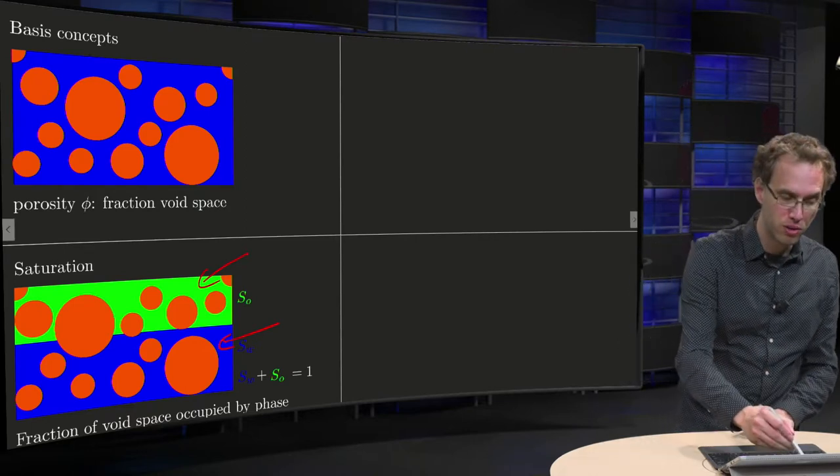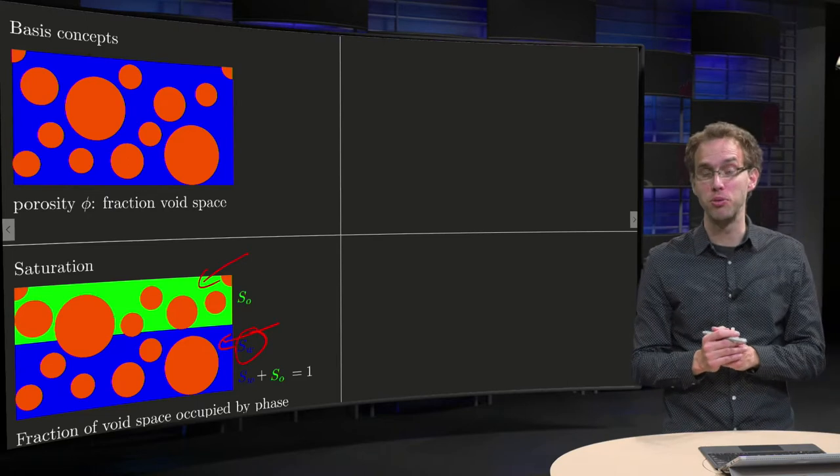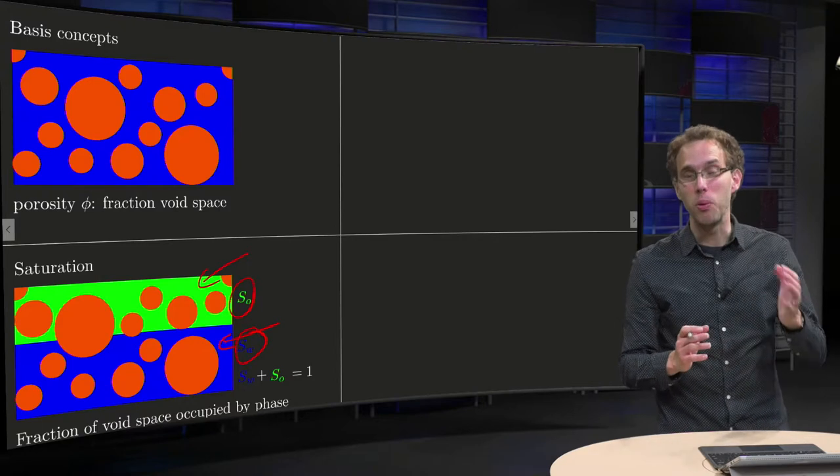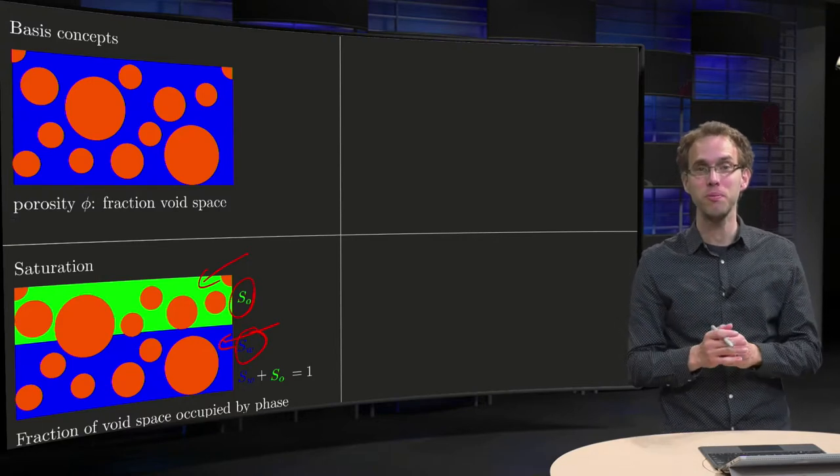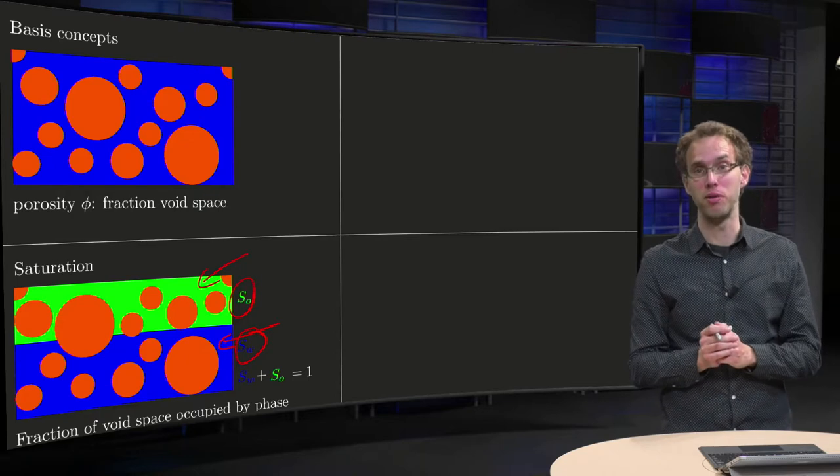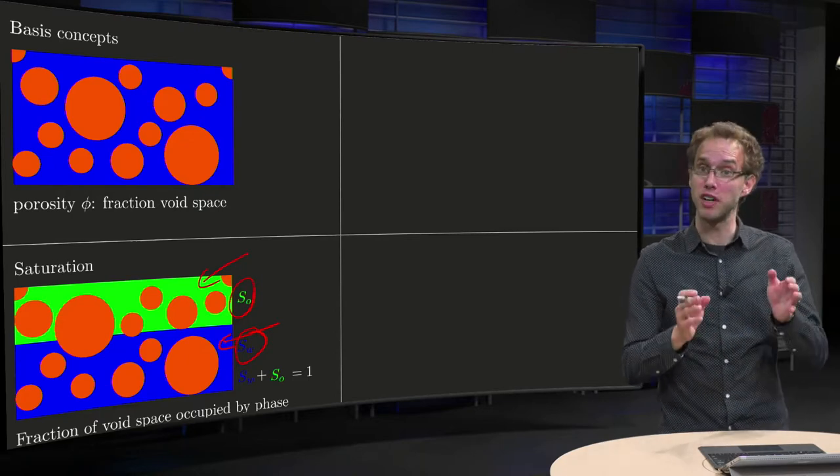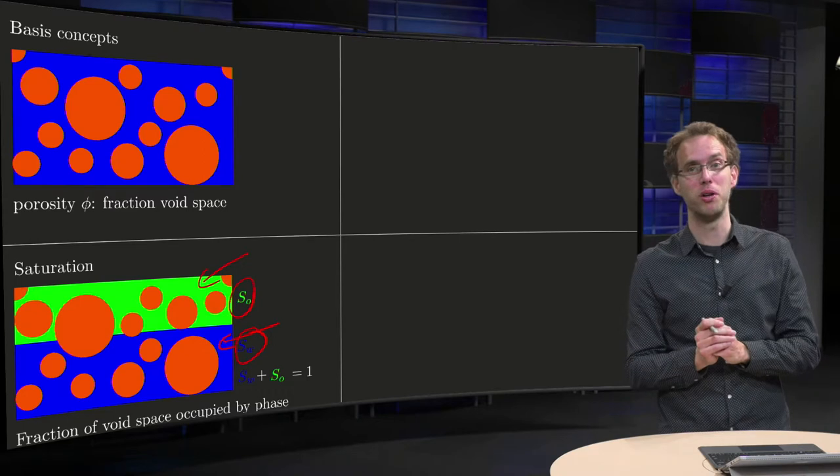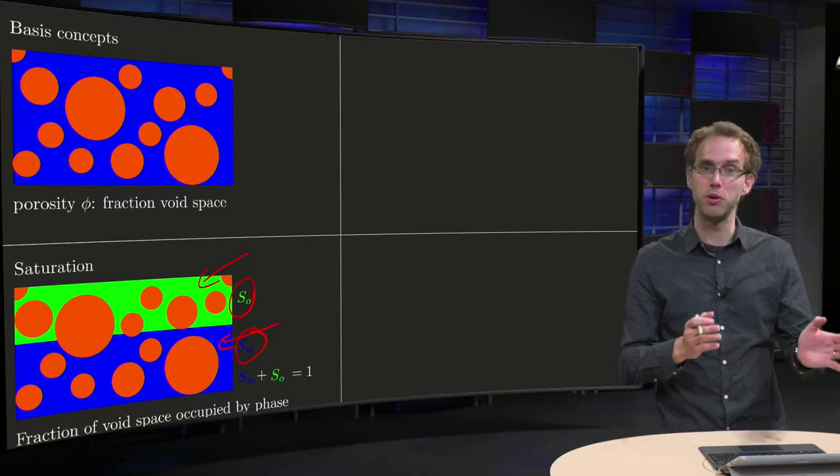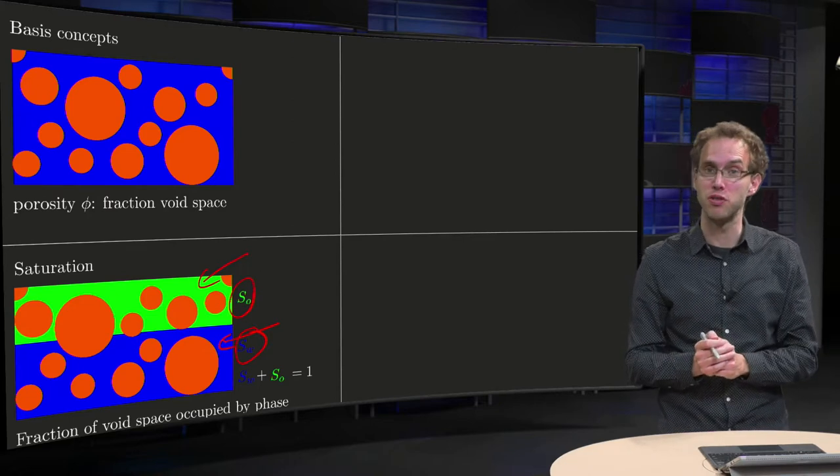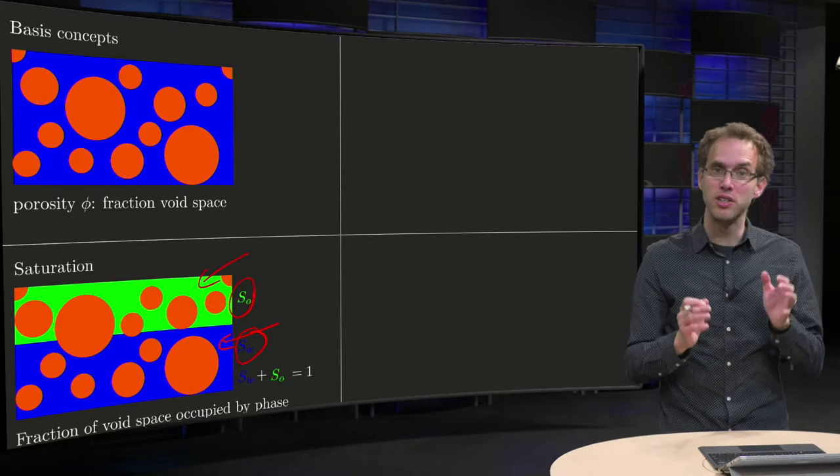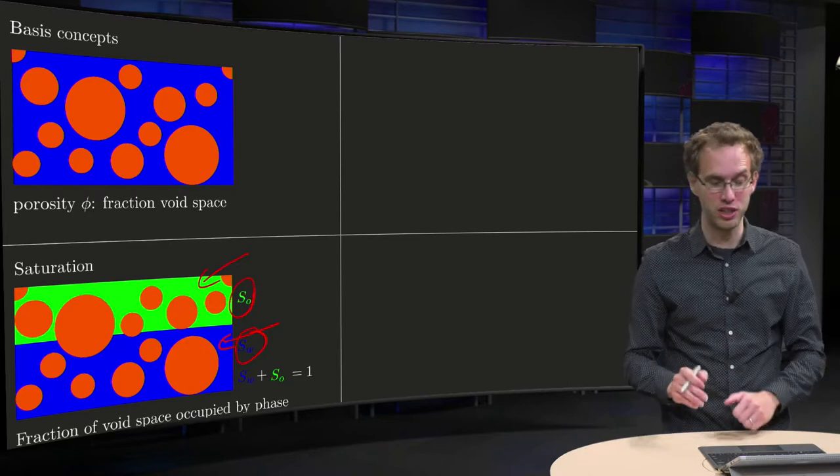Well for that we use the concept of saturation, SW for the water saturation and SO for the oil saturation. Now what's that? This SW is the fraction of the void space occupied by water, SO is the fraction of the void space occupied by oil. So if you have only two fluids here then SW plus SO, together this is one because together they will fill up all of the void space. So that's what's called the saturation of the fluid.